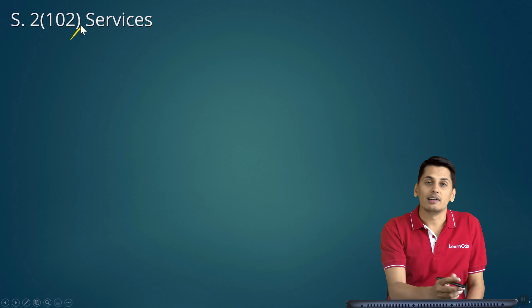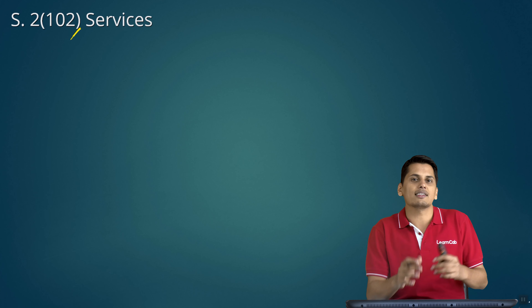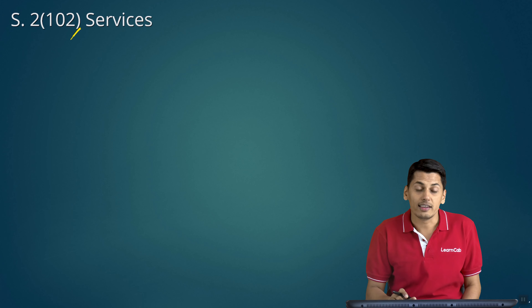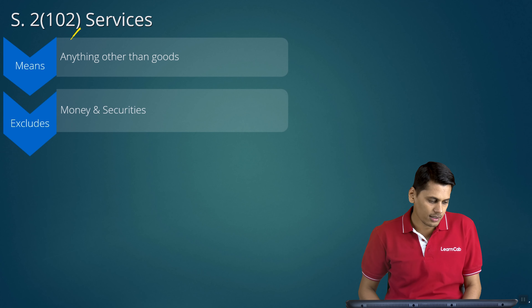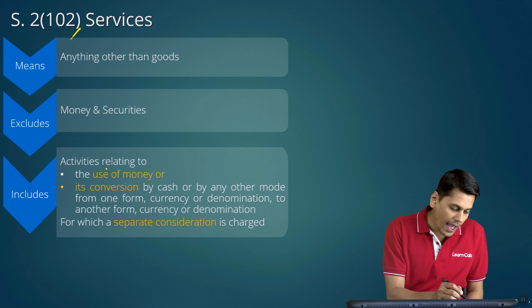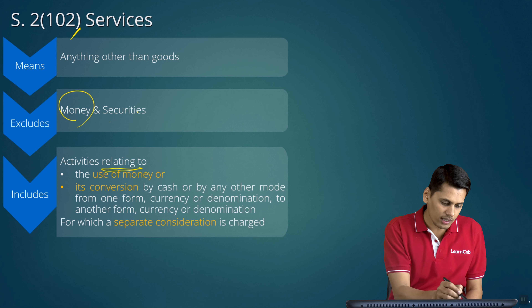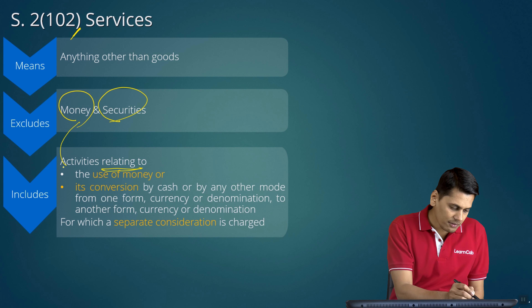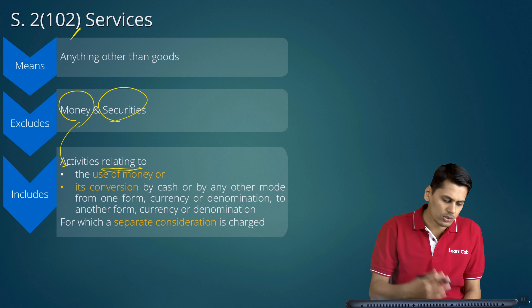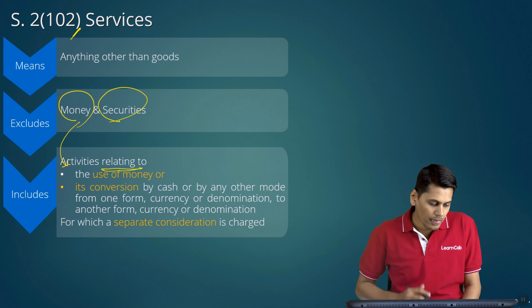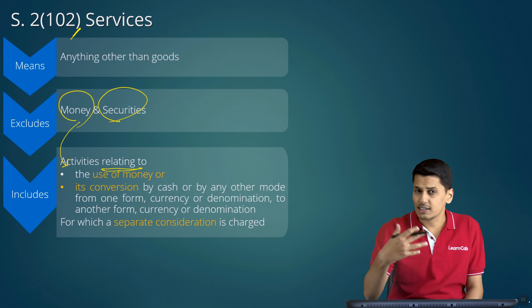Let us look at the amendment in the definition. Section 2(102) defines 'services': services means anything other than goods, excluding money and securities. Activities relating to money are covered in the includes portion. They have now included an explanation to this definition. The explanation reads: for the removal of doubts, it is hereby clarified that the expression 'services' includes facilitating or arranging the transactions in securities.